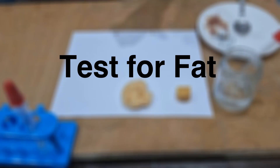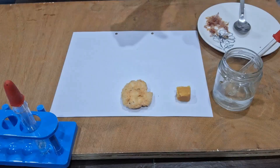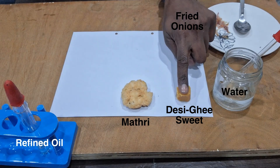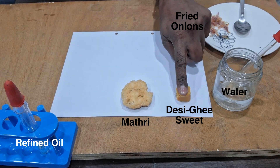In this video we're going to test a few food samples for the presence of fat. We have five samples: desi ghee, sweet, matri, some refined oil (cooking oil), fried onions, and water.